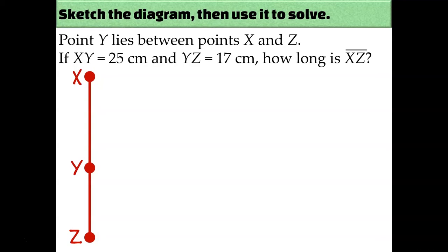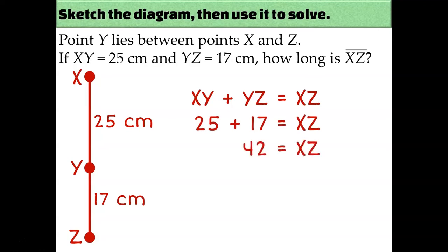Now let's label the diagram with the numerical information we were given. We were told that XY is 25 centimeters long, and YZ is 17 centimeters long. So the question is, how long is XZ? XZ is the entire segment, so in order to figure out that length, we'll need to use the segment addition postulate. We'll add up XY and YZ, the two little segments, and that'll give us the entire segment. XY is 25 and YZ is 17, so if I add those together, I get 42. So that means that the length of XZ is 42 centimeters.